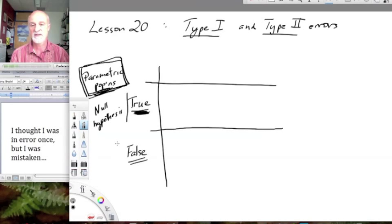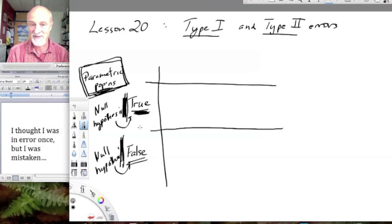That is, there are differences, or there's an effect of our x on our y. This is what the truth is about the parametric populations. It may be that the null hypothesis is truly false, and it could be that the null hypothesis is truly correct.